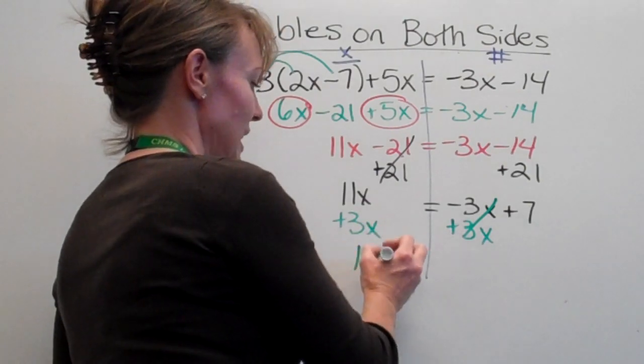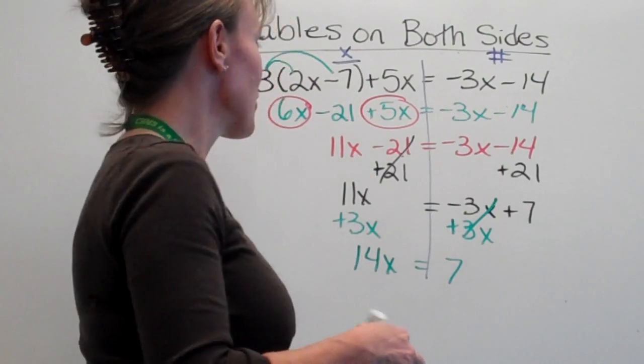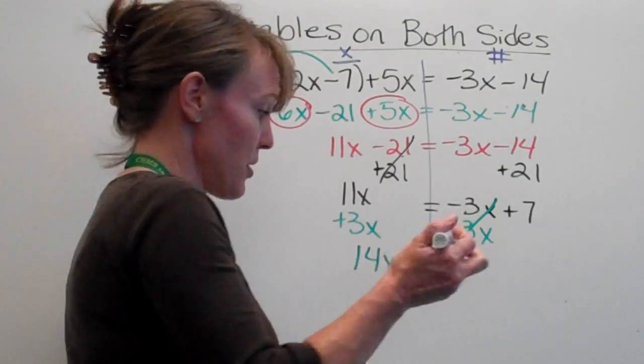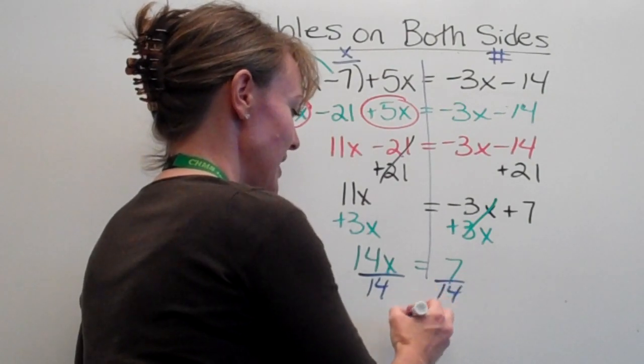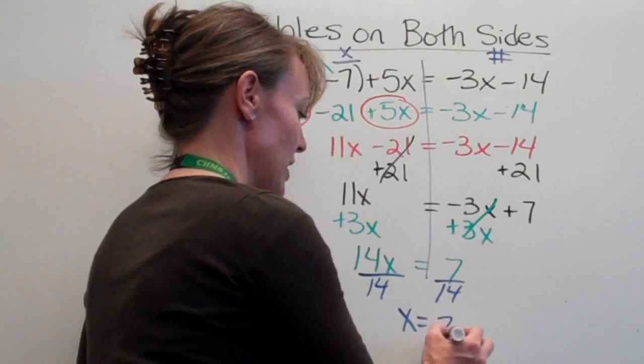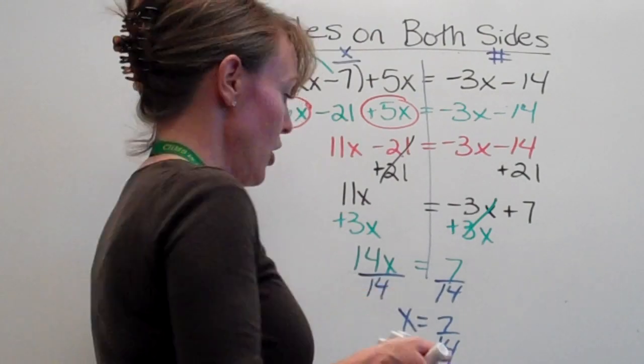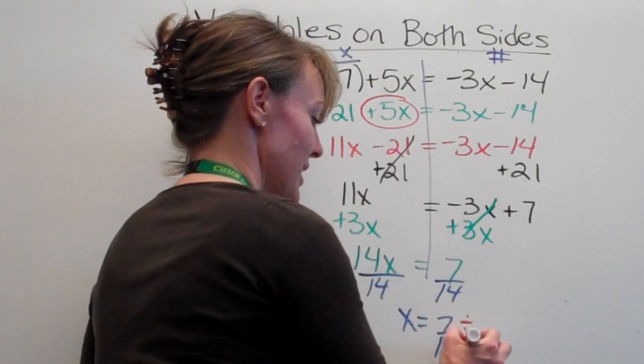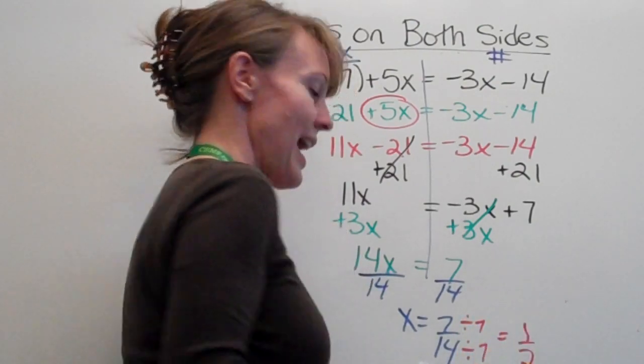I'm left with 14x is equal to 7. Ah, we love this, don't we? So now we're going to divide out the attached number. And we're going to have x is equal to 7 over 14. Oh, which isn't right, right? Because we need to reduce. So they both divide by 7. And our answer should be 1 half.